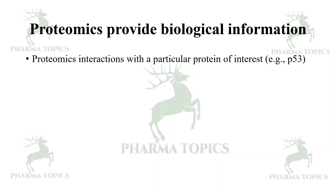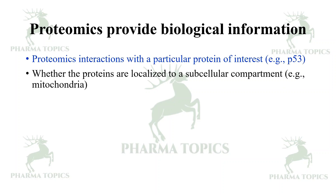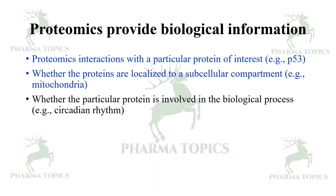Proteomics provides biological information on how proteins interact with a particular protein of interest — for example, p53: how other proteins interact with it or how p53 interacts with other proteins. It also reveals whether proteins are localized in a subcellular compartment or move between cells — for example, whether they reside in the mitochondria or nucleus — and which proteins are involved in specific biological processes such as circadian rhythm.